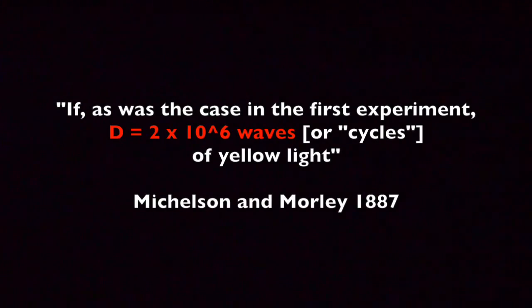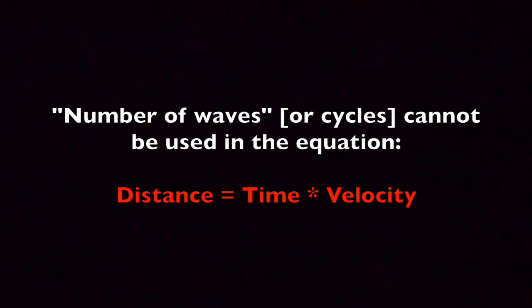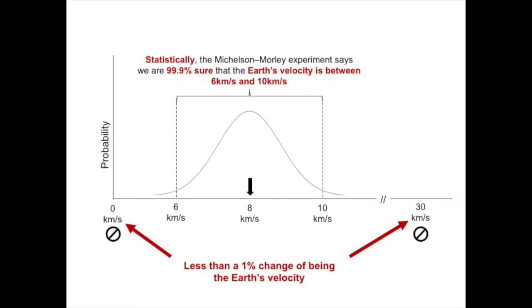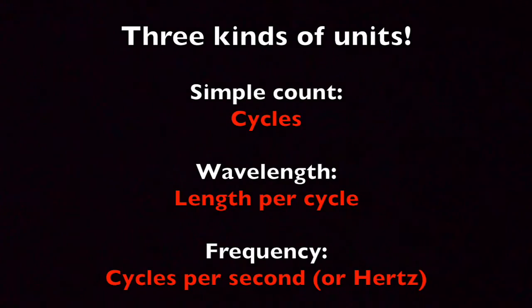Unfortunately, when Mickelson and Morley used their equation, they improperly used cycles instead of distance. Cycles is not a measurement of distance, which means that when they used it in their equation to compute the velocity, they got the wrong answer. This explains why their result doesn't statistically support an answer of 30 kilometers per second or zero. But their use of cycles offers a clue to the correct equation, which uses hertz, or cycles per second.